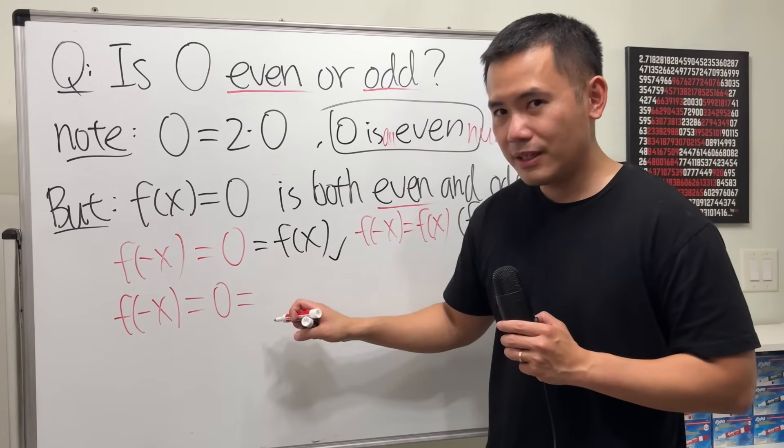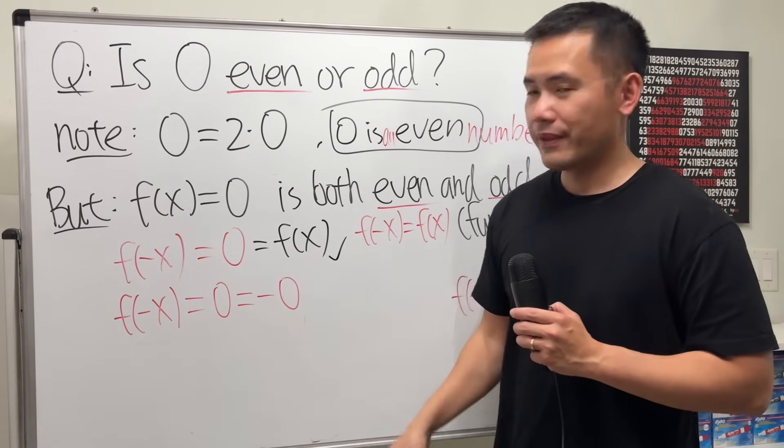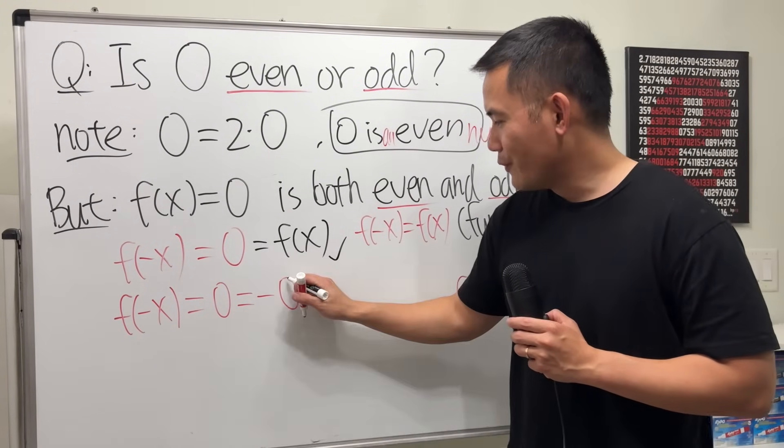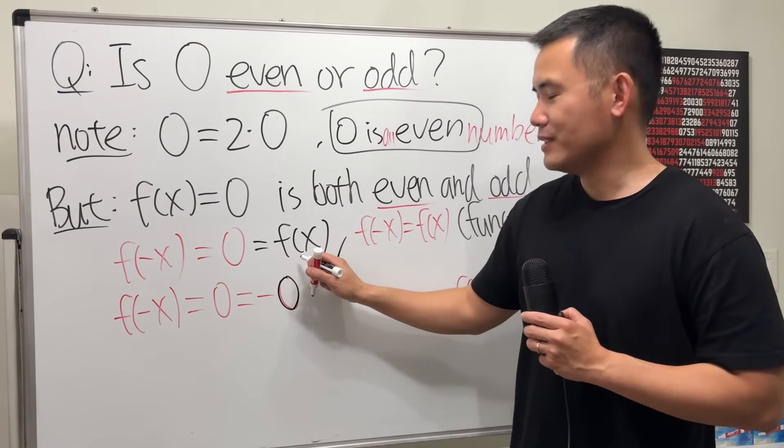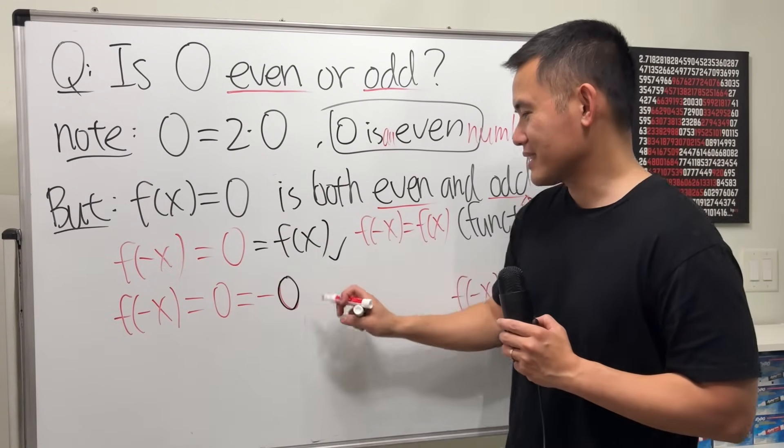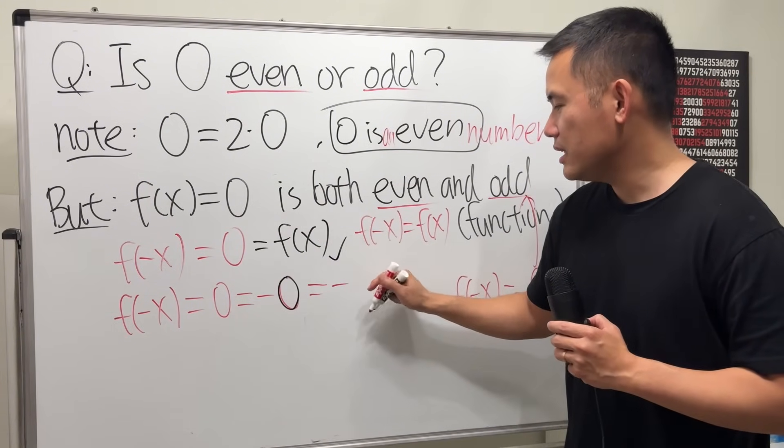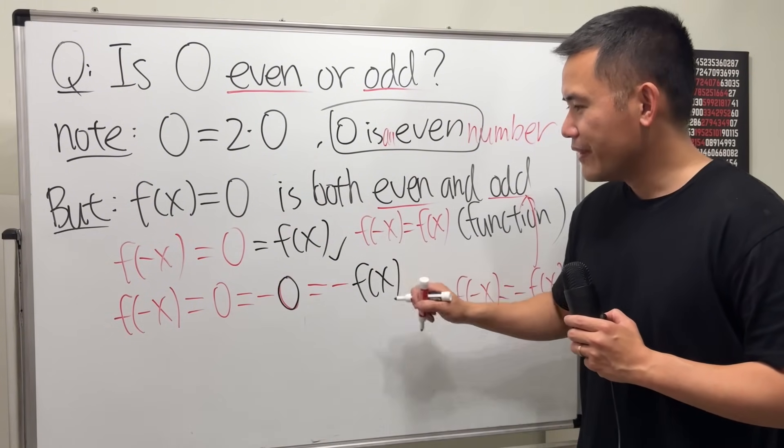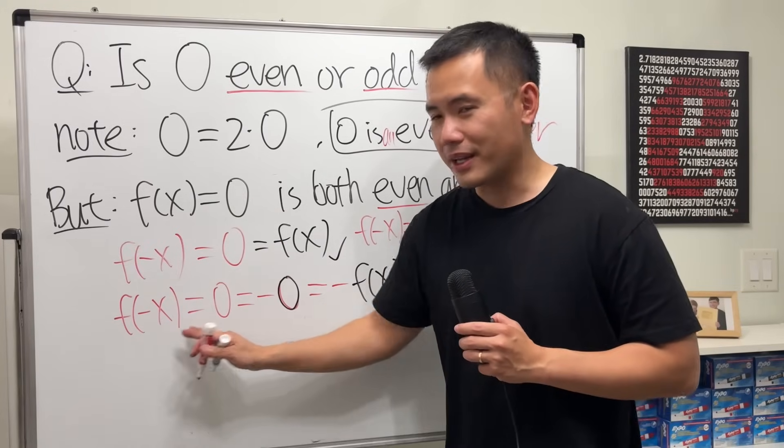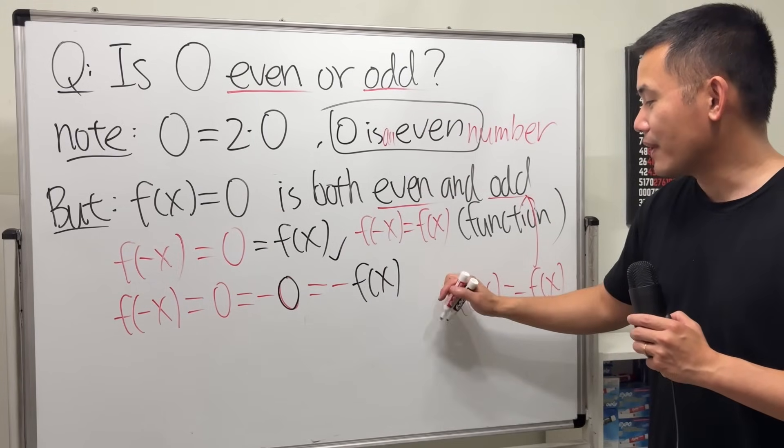But 0 is the same as negative 0. How wonderful. And then for this 0 here, that's the same as f of x. So this is indeed negative f of x. Therefore, this right here is an even function and an odd function.